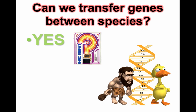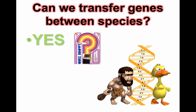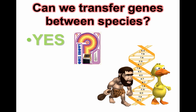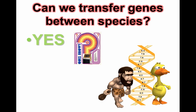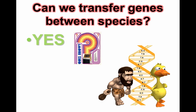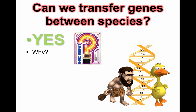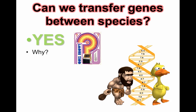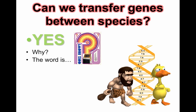Caveman, duck, human, plant, butterfly, worm, and geese all use A's, T's, C's, and G's in our DNA. Even bacteria — all living things use the same genetic code. Therefore, we can actually transfer genes between different organisms, which is very, very awesome.